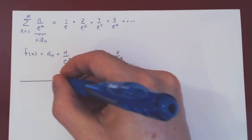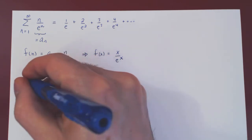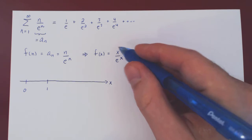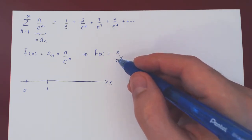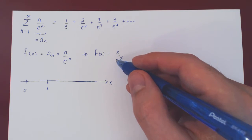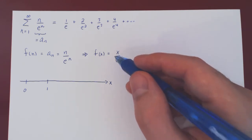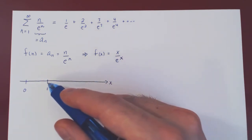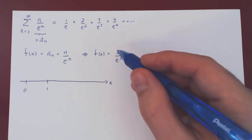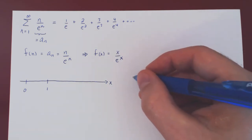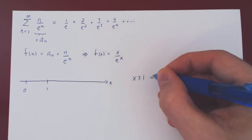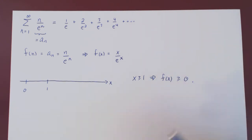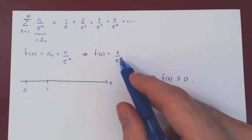Let's look at our interval. We have two things to show: the function must be eventually non-negative and eventually decreasing. The non-negative part is easy. e to the x is always positive, and as x is at least 1, x is also positive, so positive over positive is clearly positive. The fact that x is at least 1 implies that f(x) is non-negative. So on the interval, f is clearly non-negative.